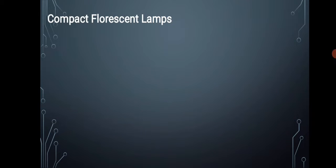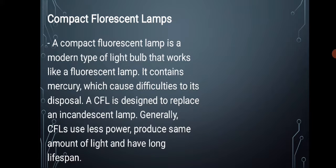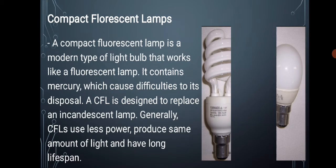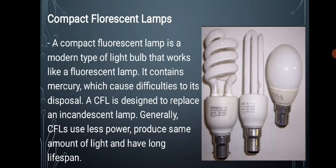Number two is compact fluorescent lamps. A compact fluorescent lamp is a modern type of light bulb that works like a fluorescent lamp. It contains mercury, which causes difficulties in disposal. A CFL is designed to replace an incandescent lamp. Generally, CFLs use less power, produce the same amount of light, and have a long lifespan. Most compact fluorescent lamps consist of two or three tubular loops, and sometimes they even look quite similar to incandescent bulbs. These lamps cannot be used with dimmers and can usually last for 10,000 hours. The luminous efficiency of a compact fluorescent lamp is about 60 lumens per watt.